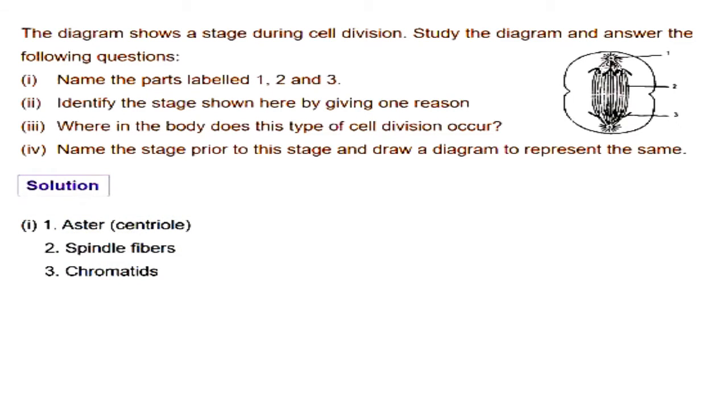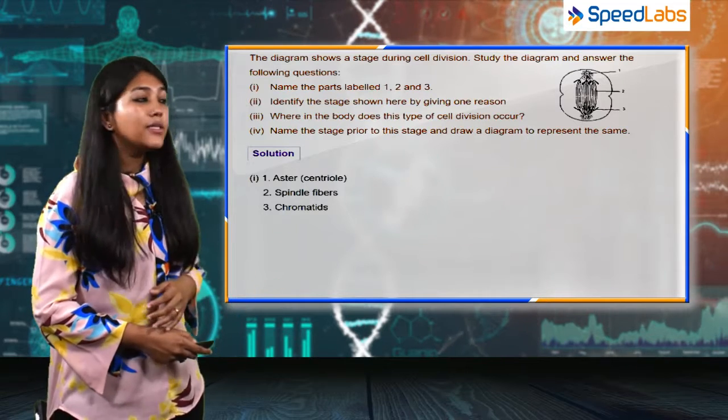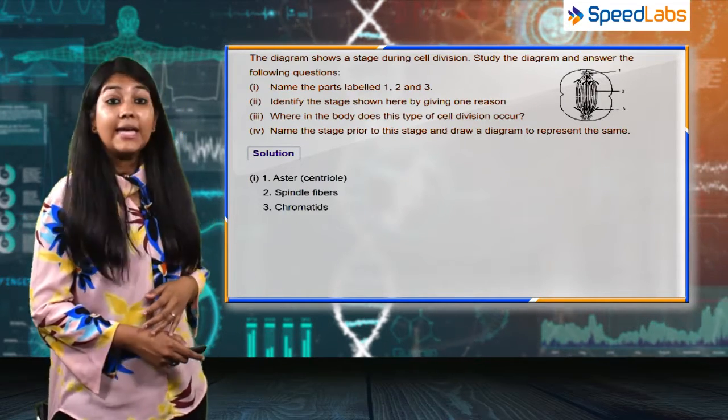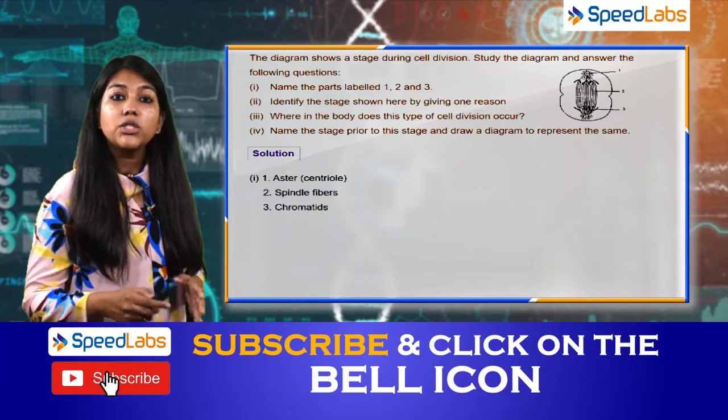In the diagram we can clearly make out that it is not a chromosome, they are the chromatids. Moving on to the next part - identify the stage shown here by giving one reason. We have to identify the stage and justify our answer.